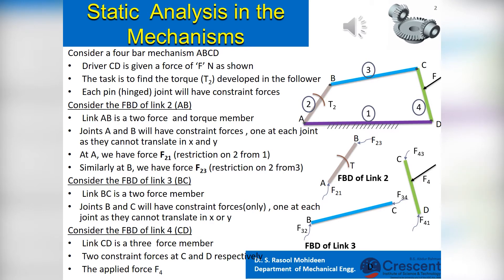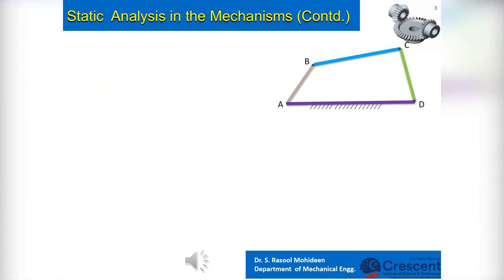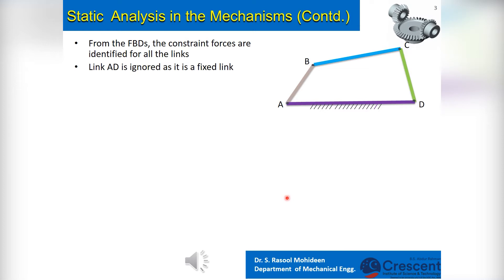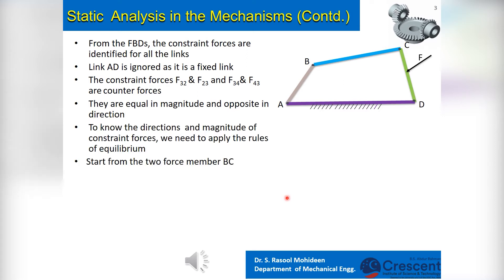At this stage we have only identified and named constraint forces. Their magnitude, direction, and sense are not known. From the FBDs, the constrained forces are identified for all the links. Link AD is ignored as it is a fixed link. The constrained forces F32 and F23, as well as F34 and F43, are counter forces — equal in magnitude and opposite in direction. To know the directions and magnitude of constrained forces, we need to apply the rules of equilibrium.